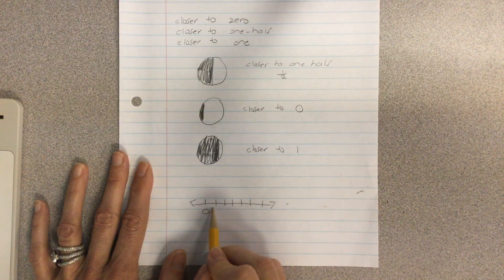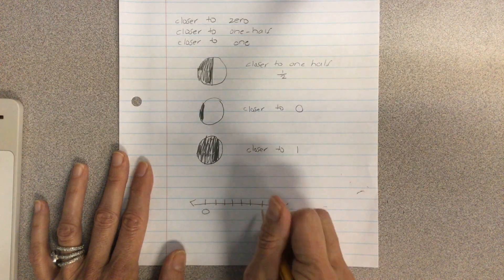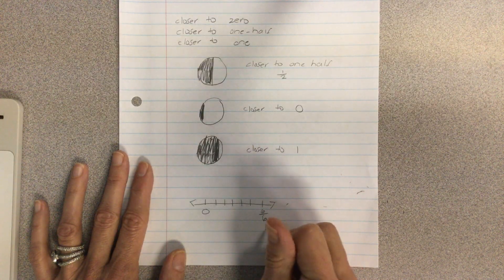And if we have six spaces, one, two, three, four, five, six, that means this is going to be six sixths, which is the same as one. Remember that? Okay.